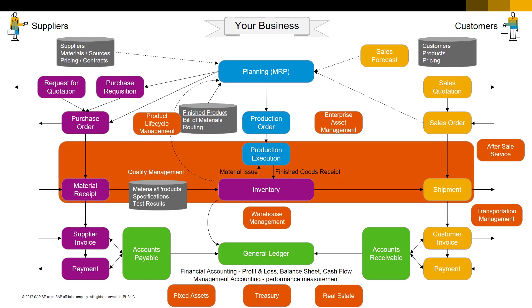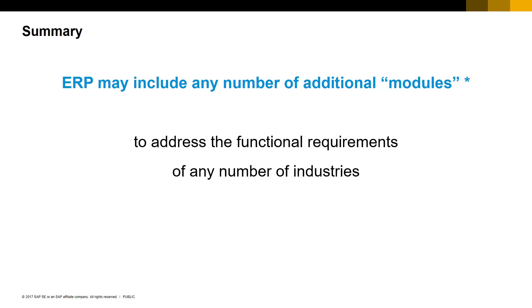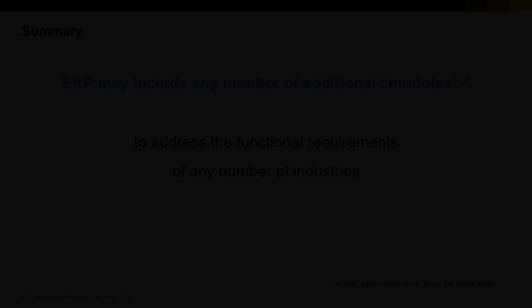So, in summary, if anyone ever asks you what else might be included in ERP, you can give them these examples. ERP can include any number of additional so-called modules to address the needs of a particular functional area, or even a particular industry. By the way, these are by no means all of the additional modules — we only showed you nine, but there are many, many more. Thanks very much for watching. This concludes Lesson 6.